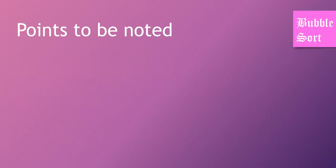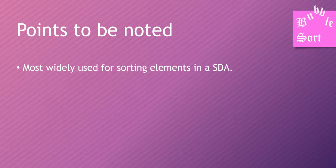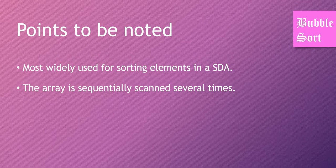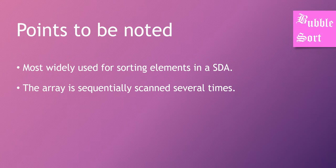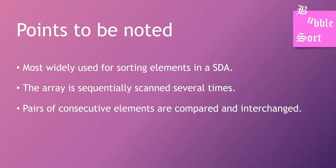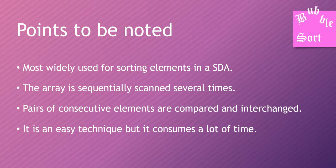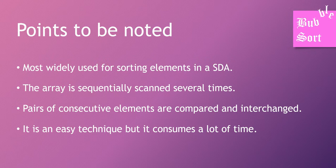Before going to the bubble sort algorithm, we are going to see some points to be noted. It is the most widely used sorting technique for elements in a single dimension array. The array is sequentially scanned several times, starting from the first element, going two elements at a time. Pairs of consecutive elements are compared and interchanged if the condition is true — that means if the values need to be swapped, it will be done. It is an easy technique but it consumes a lot of time since it checks from the beginning all the way to the end.